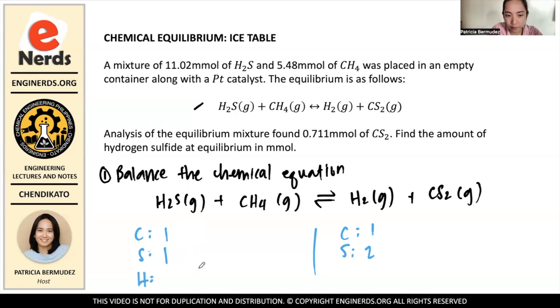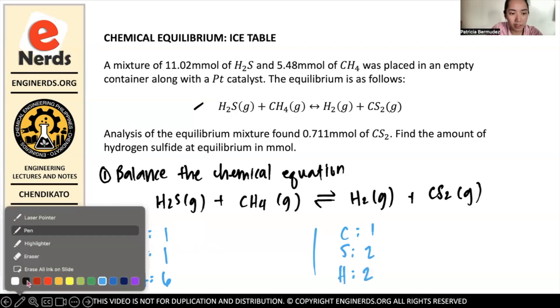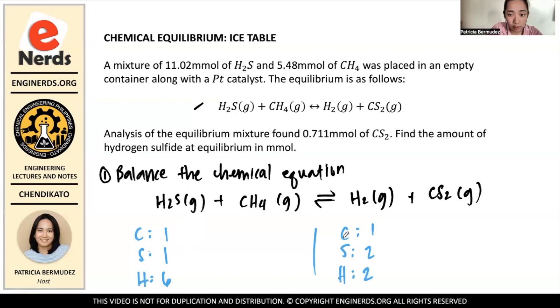And then hydrogen. For the reactant side there is 2 plus 4 equals 6, and here we have 2 only. So now we're going to do some balancing. Carbon is balanced so we just leave it as it is. How about sulfur? This one is 2, so we multiply the 1 by 2. Where is sulfur? It's in hydrogen sulfide, so we put 2 here in front. And because we multiply it by 2, we have to take into account the change that occurred. So yung sulfur natin magiging 2 na, so ito balanced na siya. Yung carbon natin ay balanced na rin.